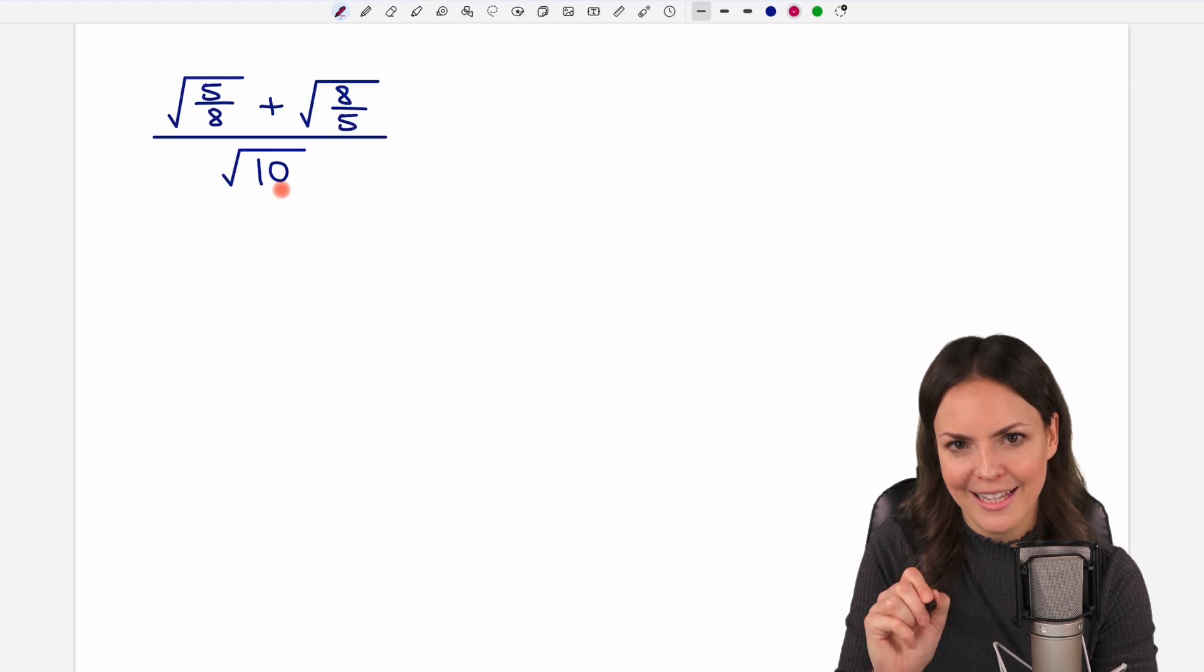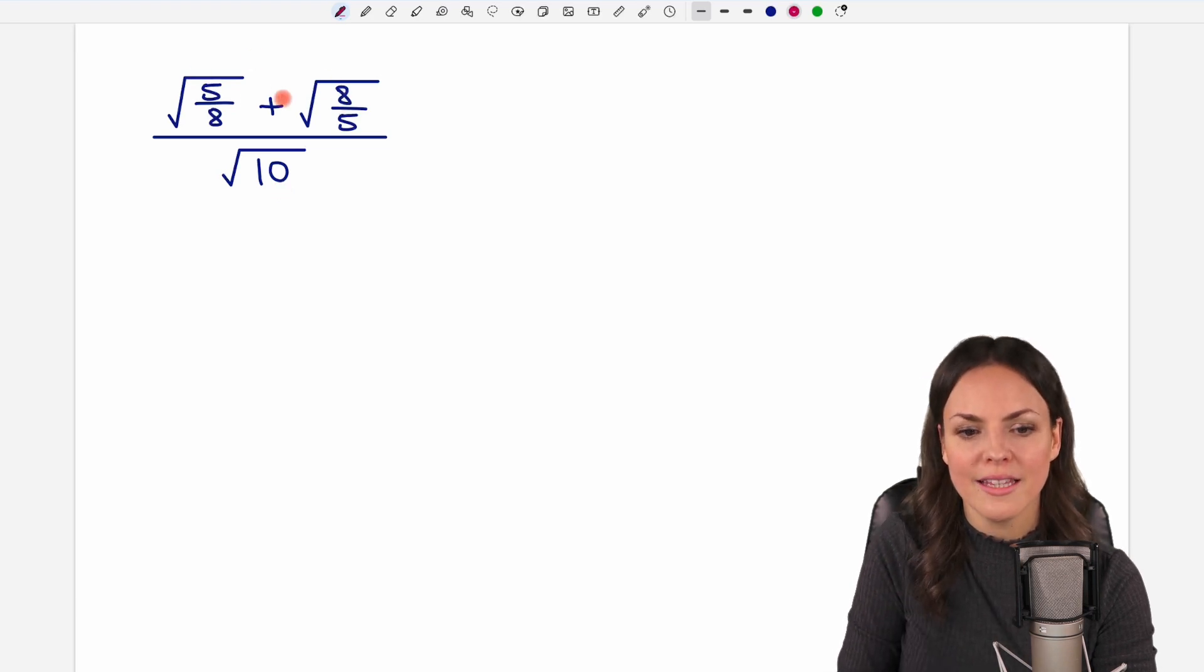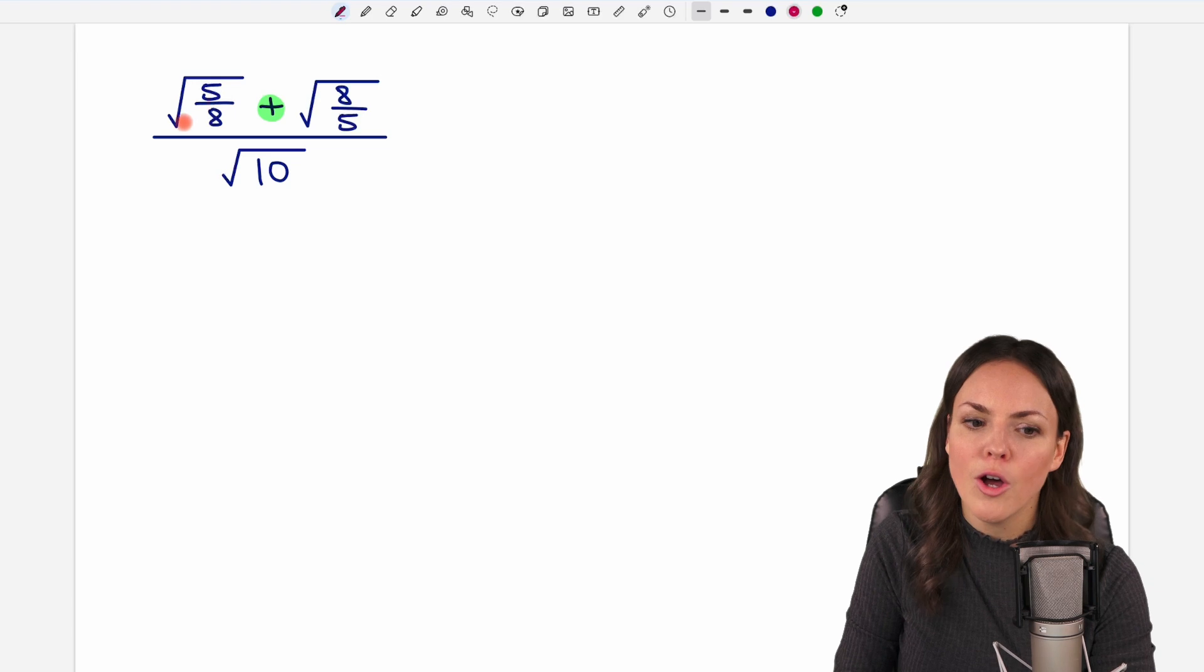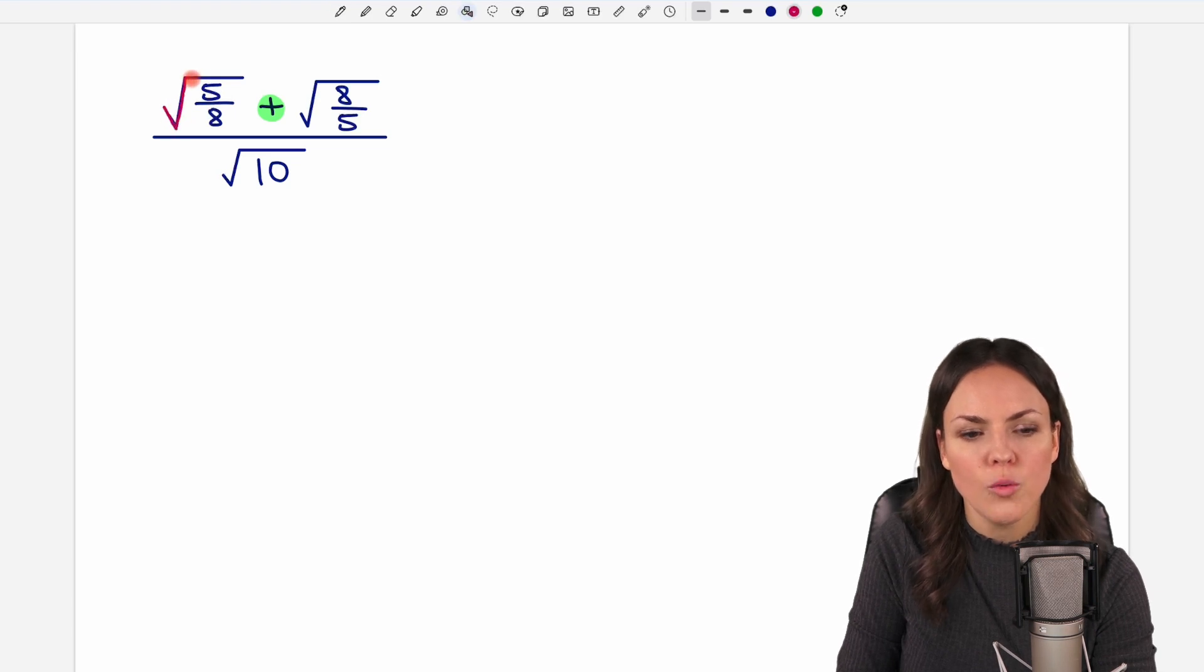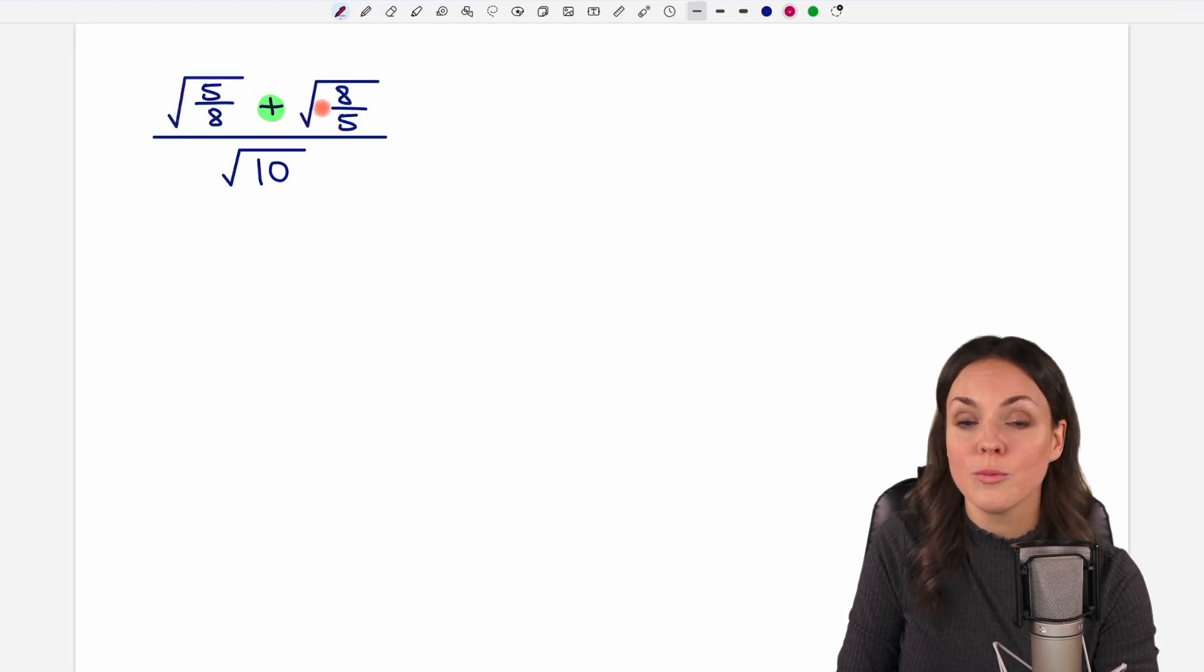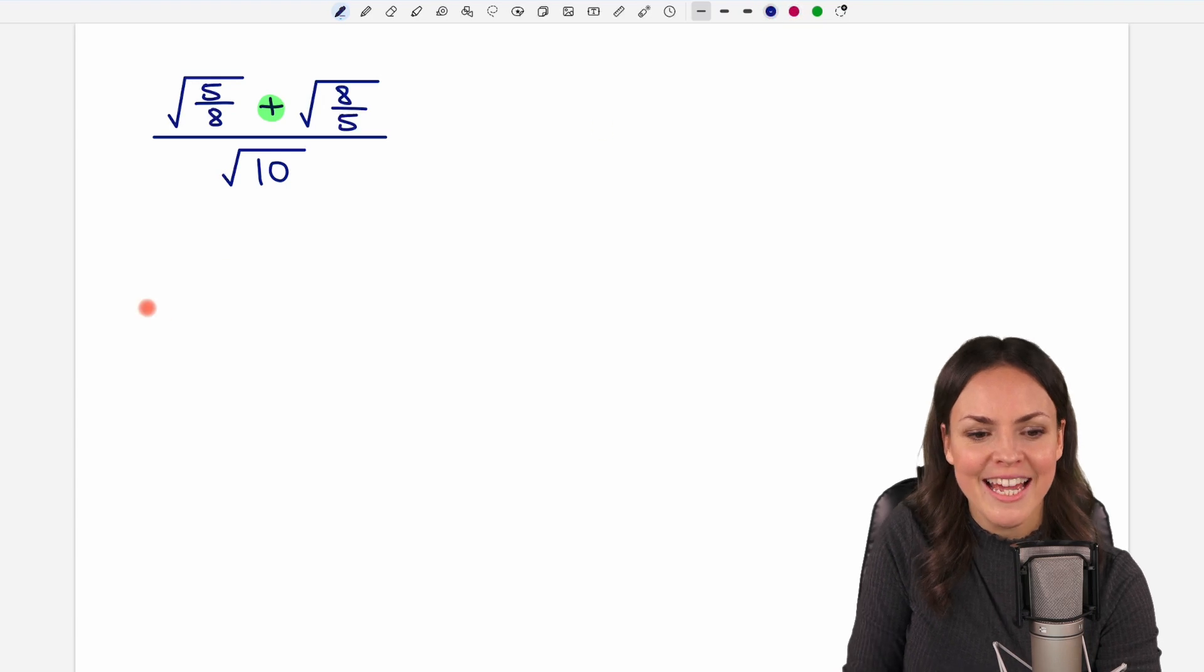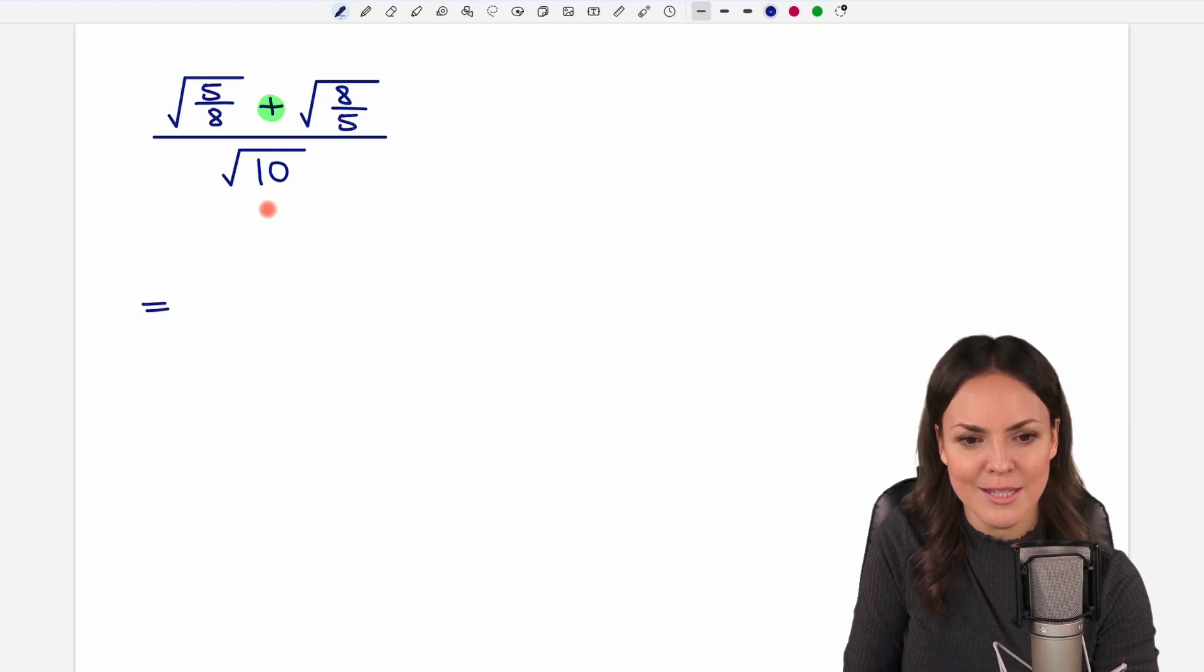We are not allowed to combine these two square roots here because we have a plus symbol and there is no rule that tells us you can just write this as one big square root and add the two fractions. This is not a thing. This would only be okay if we had a multiplication symbol or a division symbol, then you can combine two square roots, but this is not the case so we have to find another way how to simplify this big fraction.